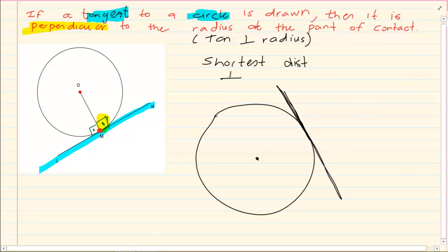And then they ask you to calculate information. But it is almost impossible unless you put this line in. And once you put this line in, you immediately can put that it is 90 degrees and you can state tangent perpendicular to radius.